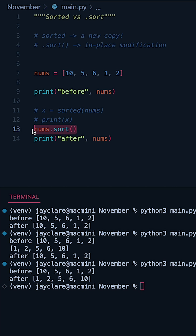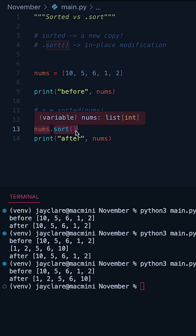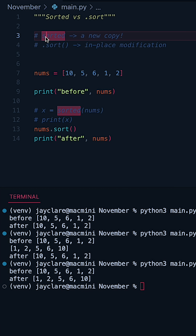One thing to note as well: .sort is only for lists — it's a method on the list class. Sorted, on the other hand, is a general purpose function that can take in a few different types of inputs; it's not specifically tied to using lists only.